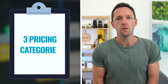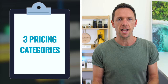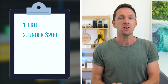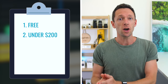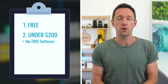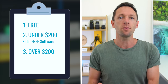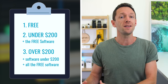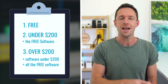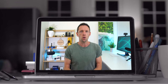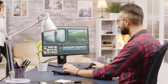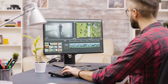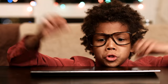Just like last time, I'm gonna break this overview down into three pricing categories. The first one is all the free options. The second one is everything under $200, including the free options. And the third category is software priced above $200. I'm also gonna include the software that is under $200 and free as well, so you can leave here knowing how the paid and more professional stuff stacks up to what you can get at a lower price point or even free.